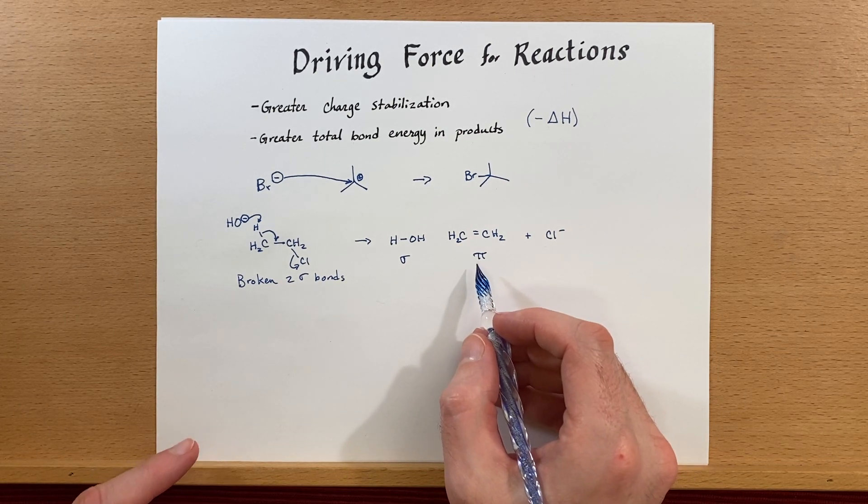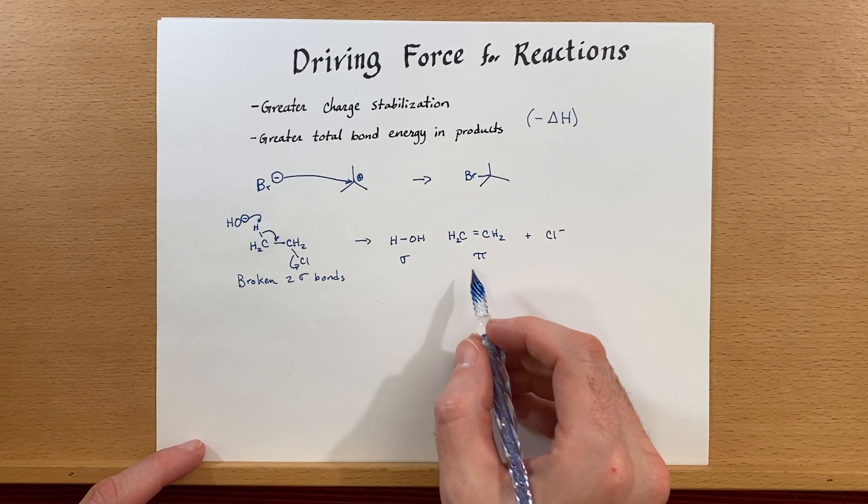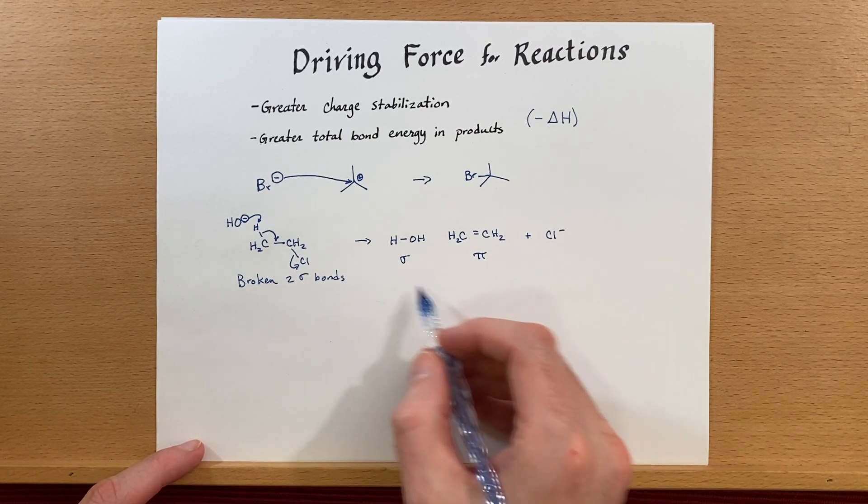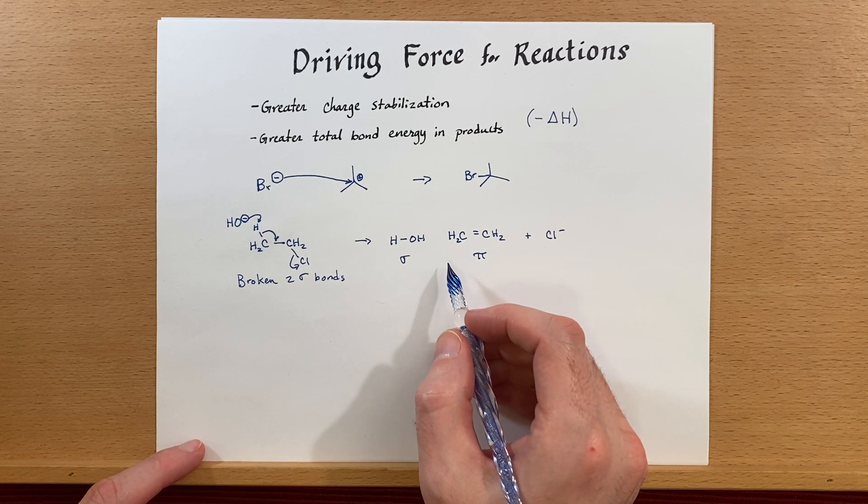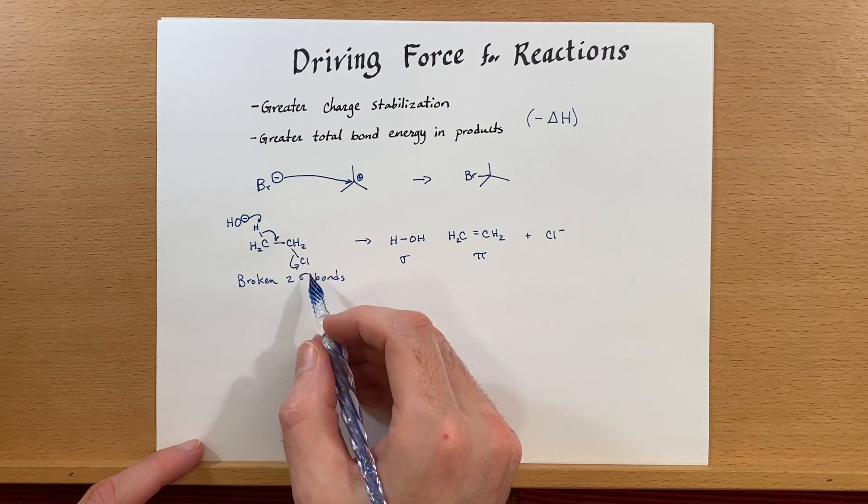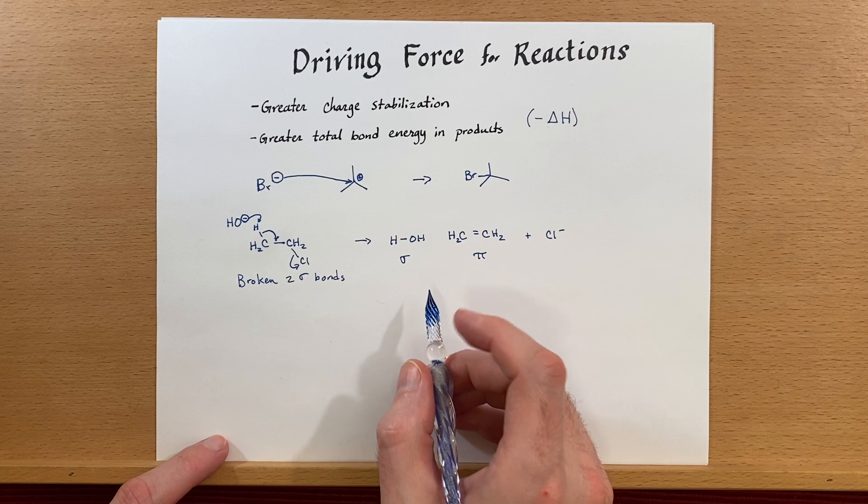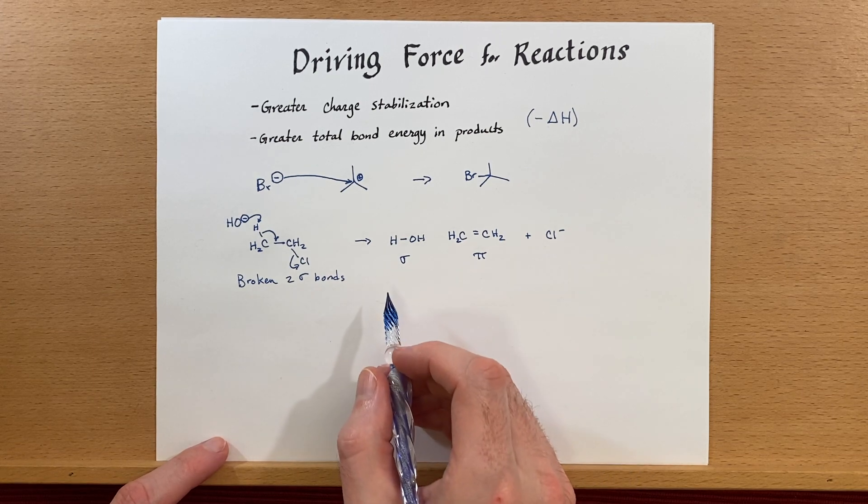Now, pi bonds are generally weaker than sigma bonds. And so the total bond energy on this side is probably less than the total bond energy over on our reacted side. So that's kind of a negative for this reaction going forward. But this reaction does happen.